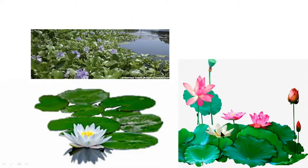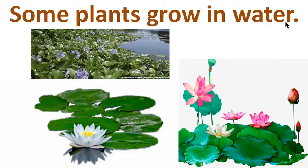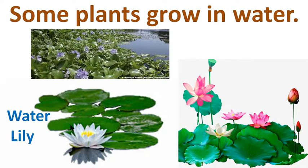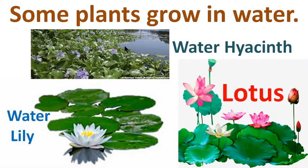These plants grow in water. Some plants grow in water. This is a water lily — water lily grows in water. This is lotus — lotus also grows in water. And this is water hyacinth — water hyacinth grows in water.